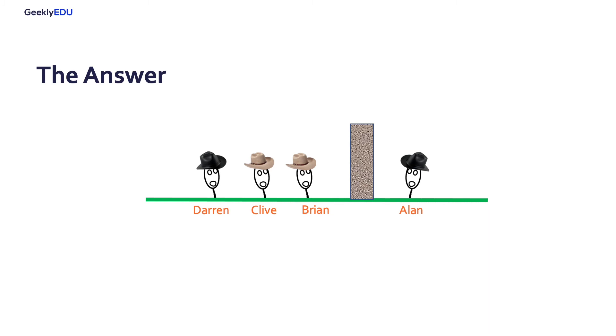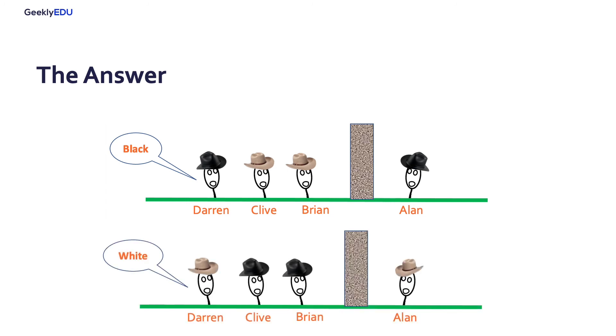Let's think about the other possible layouts on this problem. If Clive and Brian were using hats with the same color, let's say white, Darren would instantly know that his hat was black, because they know that there are two blacks and two whites. The same thing would happen if Clive's and Brian's hats were black.